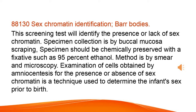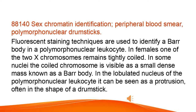Sex chromatin identification, bar bodies. This screening test will identify the presence or lack of sex chromatin. Specimen collection is by buccal mucosa scraping. Specimen should be chemically preserved with a fixative such as 95% ethanol. Method is by smear and microscopy. Examination of cells obtained by amniocentesis for the presence or absence of sex chromatin is a technique used to determine the infant's sex prior to birth. Sex chromatin identification, peripheral blood smear, polymorphonuclear drumsticks. Fluorescent staining techniques are used to identify a bar body in a polymorphonuclear leukocyte. In females, one of the two X chromosomes remains tightly coiled. In some nuclei the coiled chromosome is visible as a small dense mass known as a bar body. In the lobulated nucleus of the polymorphonuclear leukocyte it can be seen as a protrusion, often in the shape of a drumstick.